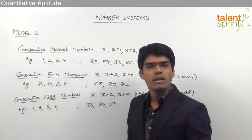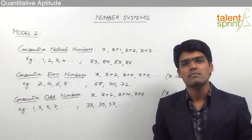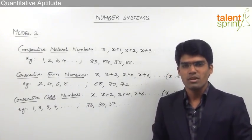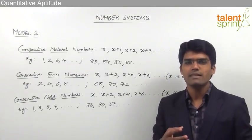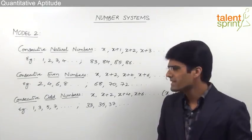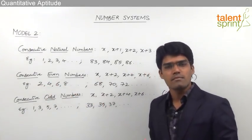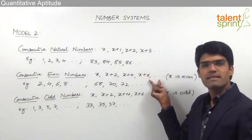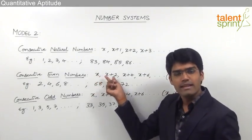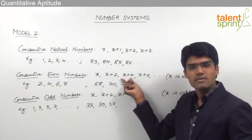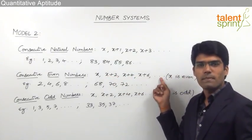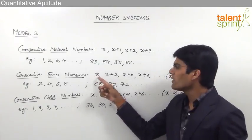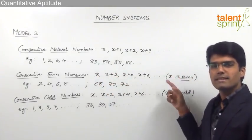The second type is consecutive even numbers. Even numbers are those exactly divisible by 2. When even numbers appear in a row without any gap, they are called consecutive even numbers — for example, 2, 4, 6, 8. These can be represented as x, x+2, x+4, x+6 and so on, where the first number x must be even.